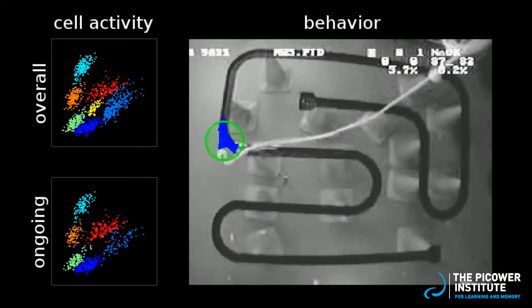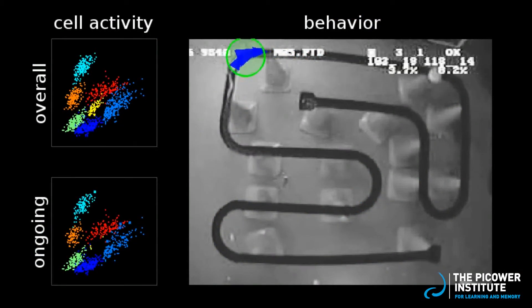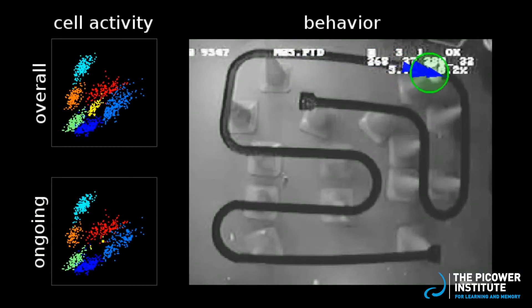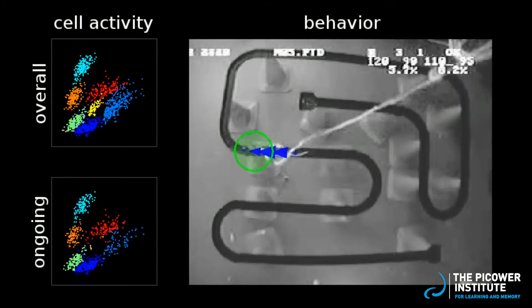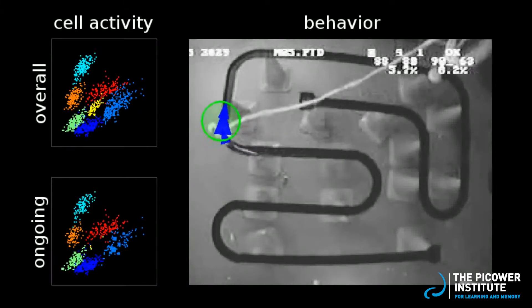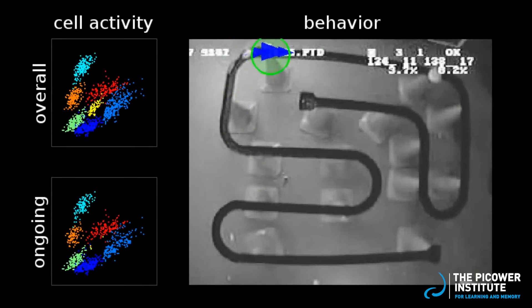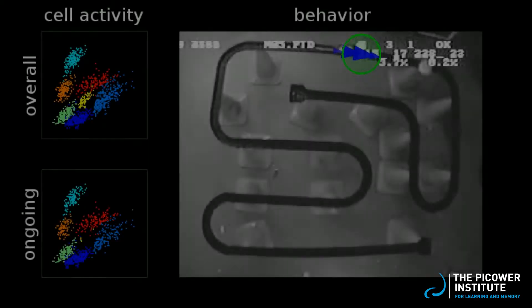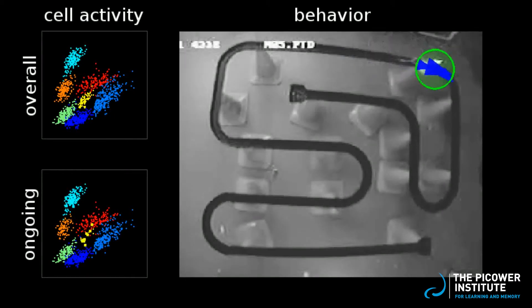The place cells allow us to decode the rat's location from brain activity. In this video, blue arrows predict where the rat is located based only on the place cell activity. The predicted locations of the blue arrows are almost perfectly aligned with the rat's actual position. So, if the lights were turned off and we couldn't see him, we would still be able to figure out the rat's location by reading his brain activity.